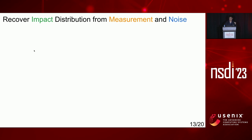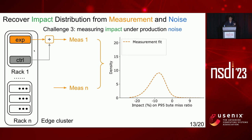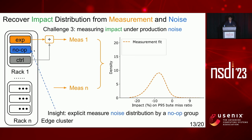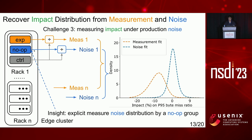Next, let's talk about our impact distribution analysis design. The challenge is measuring algorithm impact amid production noise. Standard A-B tests use an experiment machine and a control machine. Our insight is to explicitly measure the noise distribution by introducing a third group of no-op machines. No-op machines use the baseline algorithm; we divide the no-op byte miss ratio by the control byte miss ratio to calculate one noise sample, then aggregate all noise samples to obtain the noise distribution. The last step is to fit the true impact distribution using maximum likelihood estimation.